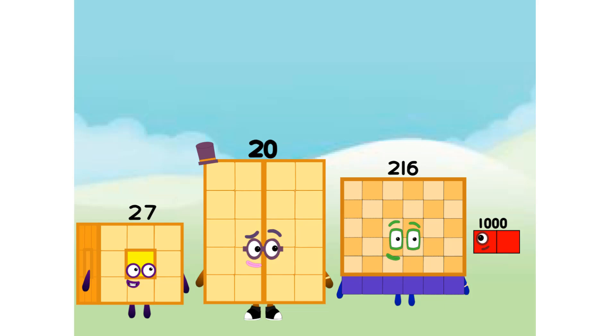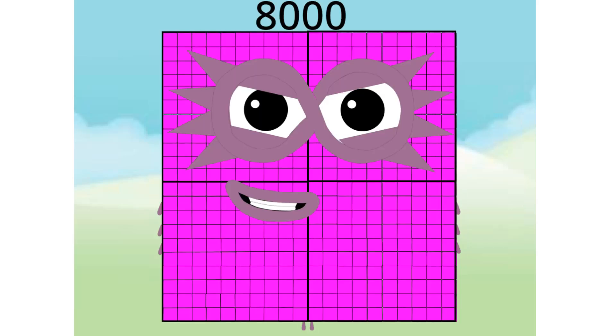That means there will be 3 of me. Numberblock 20, I am 8000. I am 1000, octoblock to the rescue. I am 20, 20, 20s. I can make 100 8s on the job. I am 8000s.